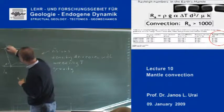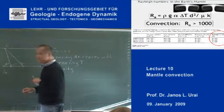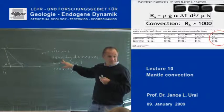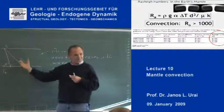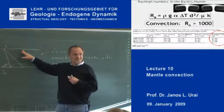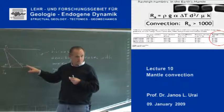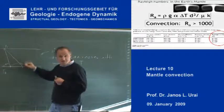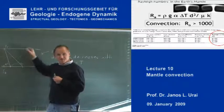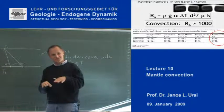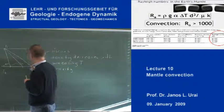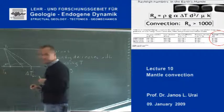If we now increase the temperature gradient to a higher value, the density at the bottom is more buoyant — there is a bigger difference in density between top and bottom. We may still be in the case where a small rising element cannot reach the top because it is cooled by its surroundings, and the system is still stable. But then there is one critical temperature gradient — delta T critical — at which convection begins.